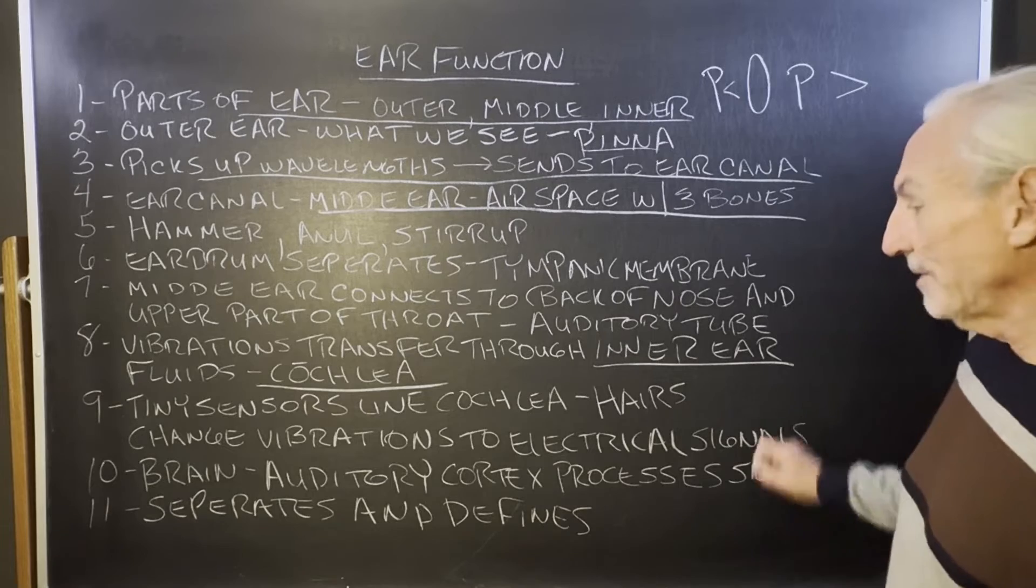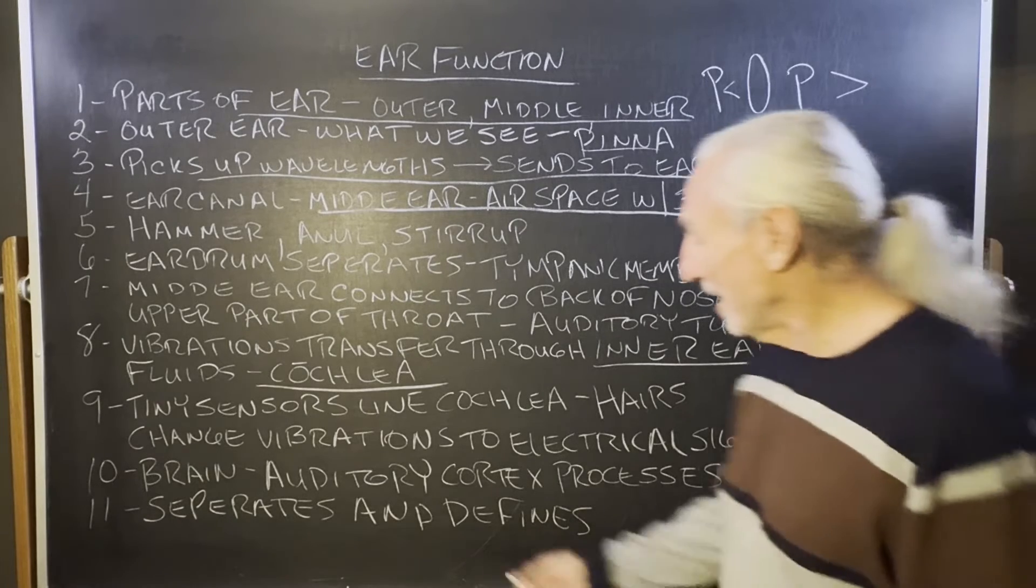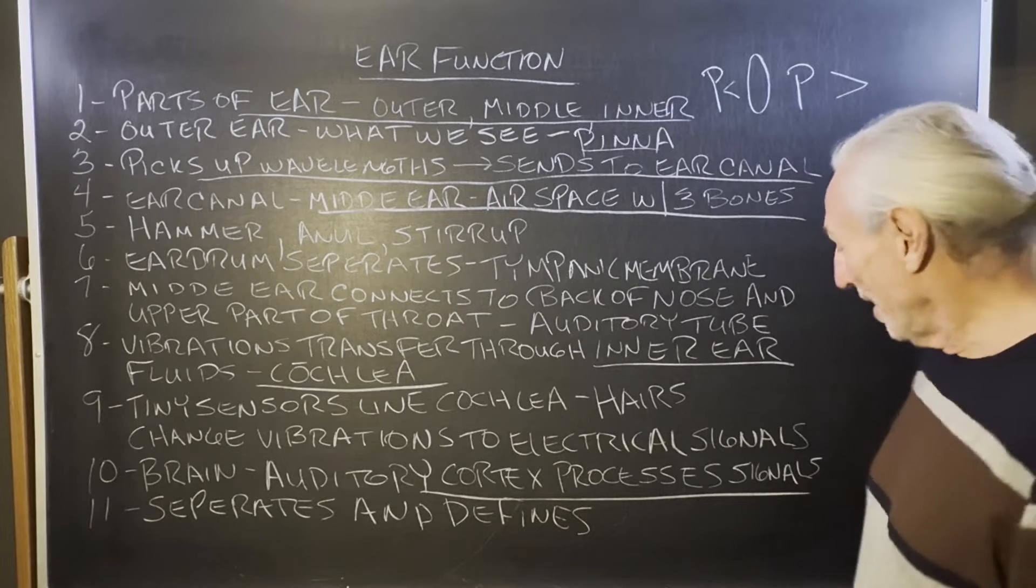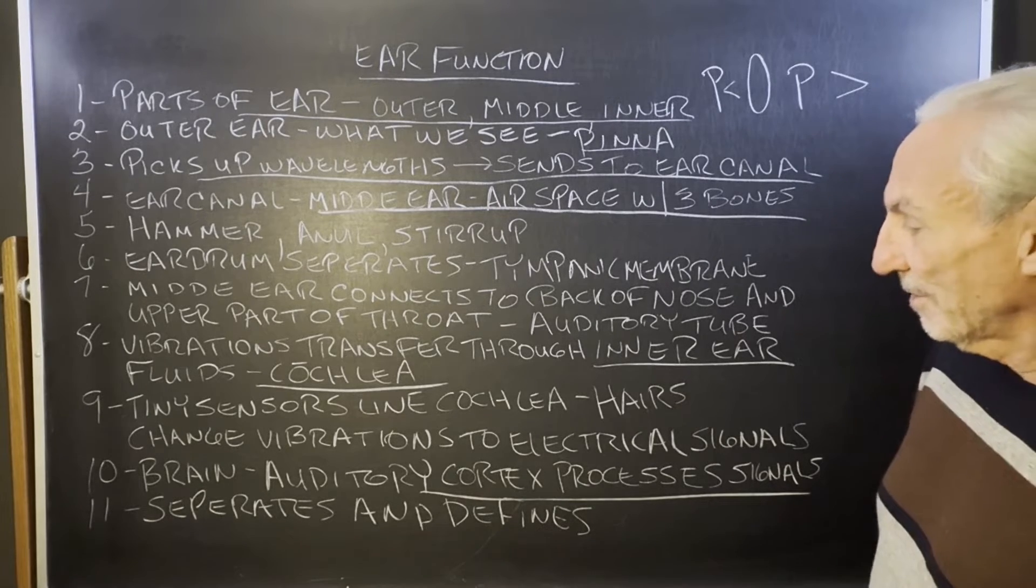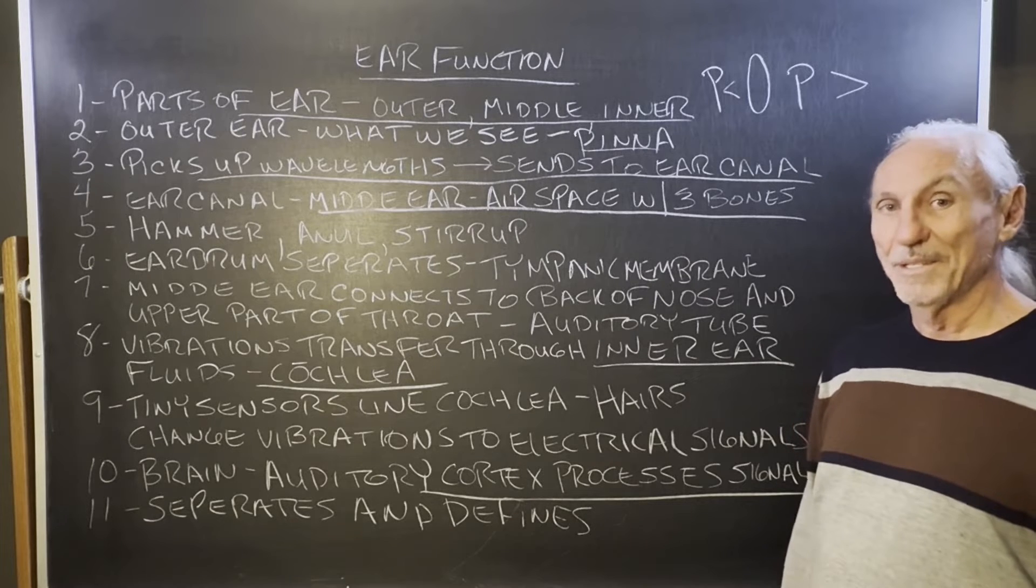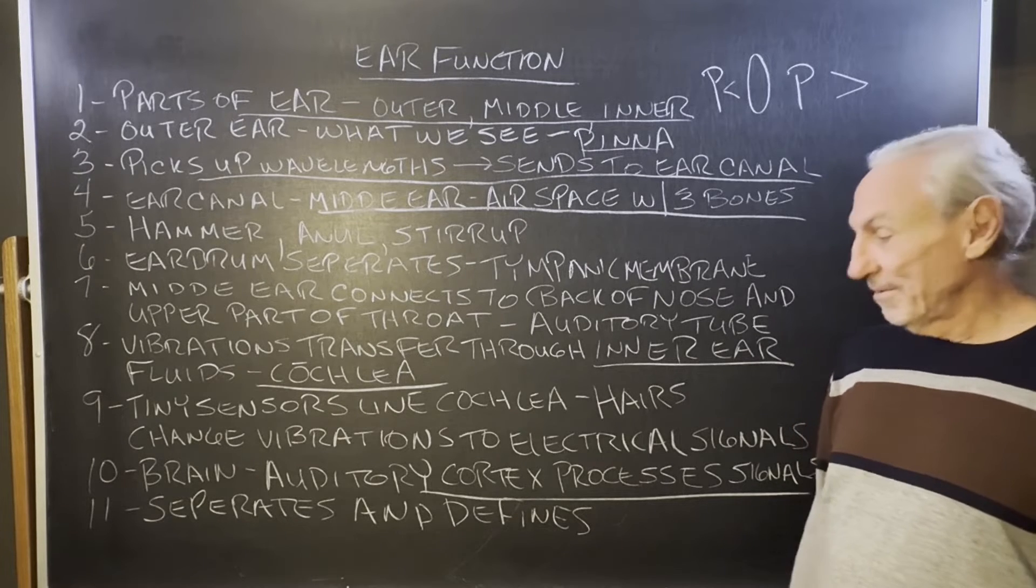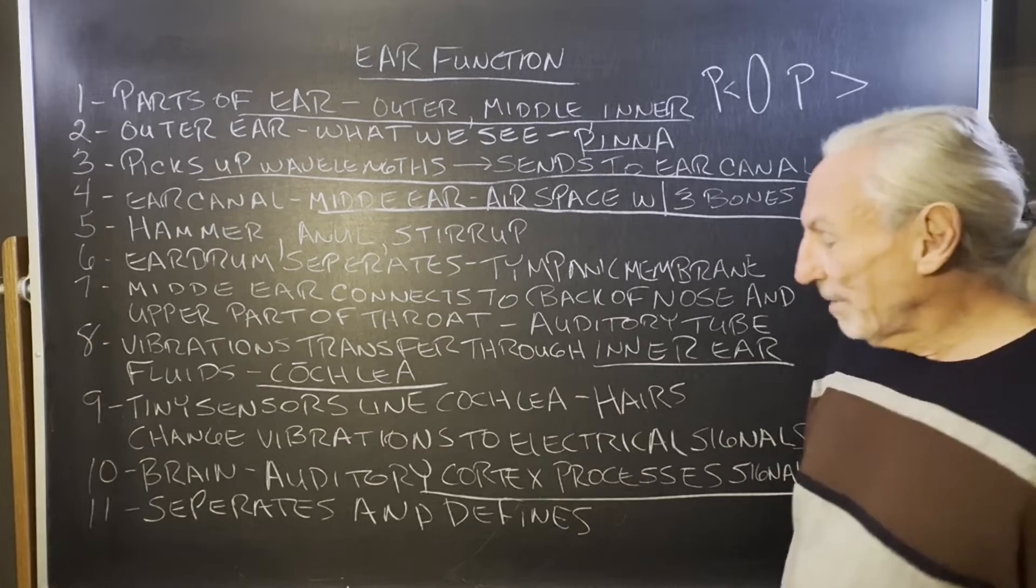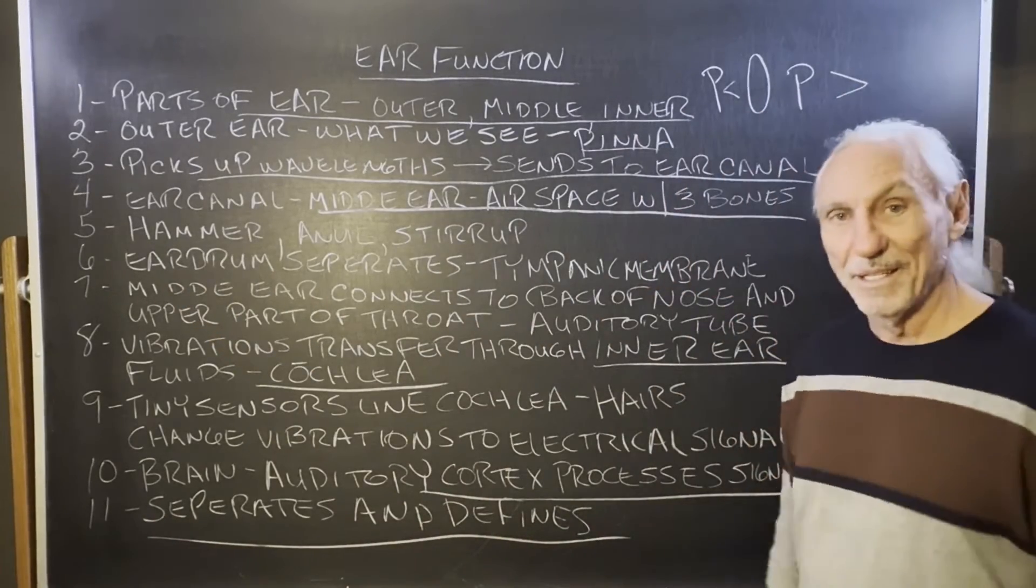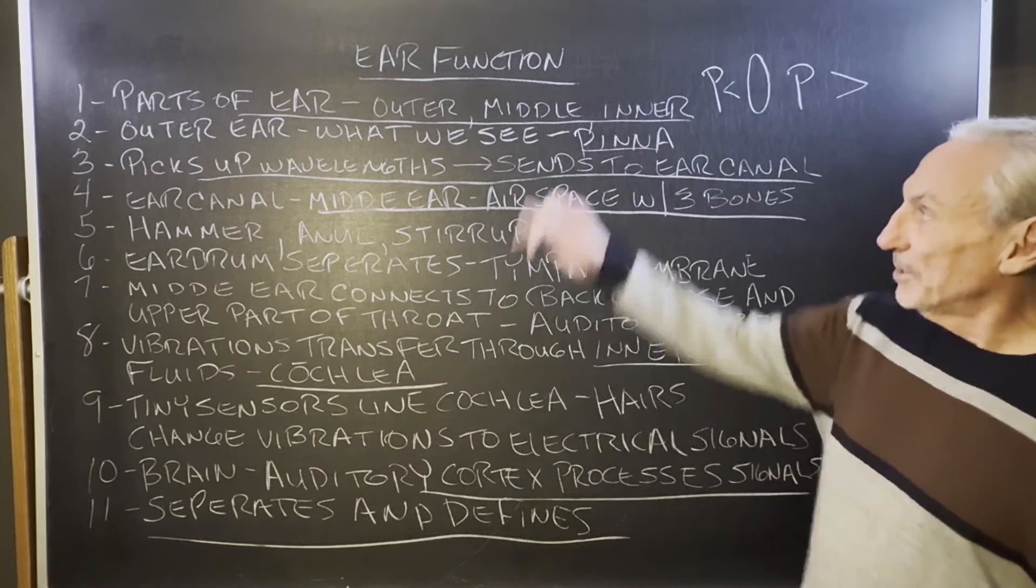The brain then gets these electrical impulses and processes them through the auditory cortex. And that's the processor, like an A and D converter, A to D converter, D to A converter. So probably D to A in this case. So it separates and defines.